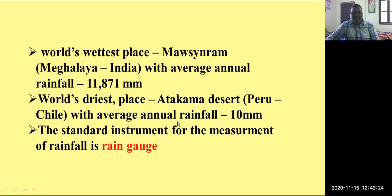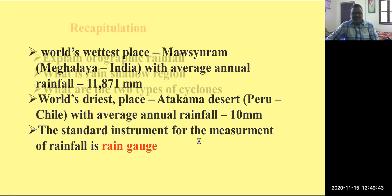The standard instrument for the measurement of rainfall is the rain gauge. We discussed about rain gauge — how to measure rainfall using a rain gauge — in the seventh class.